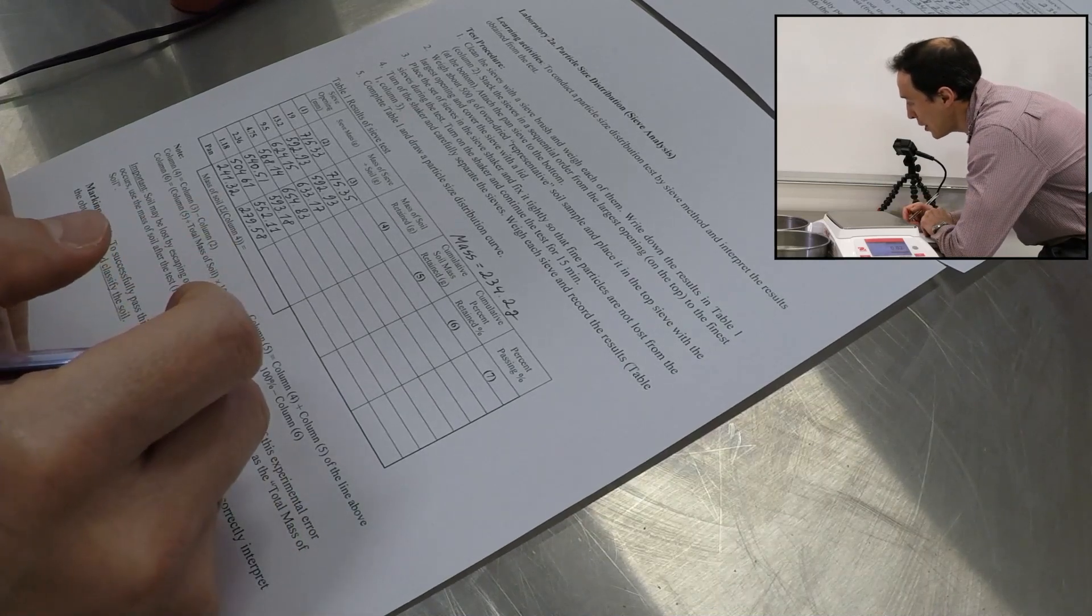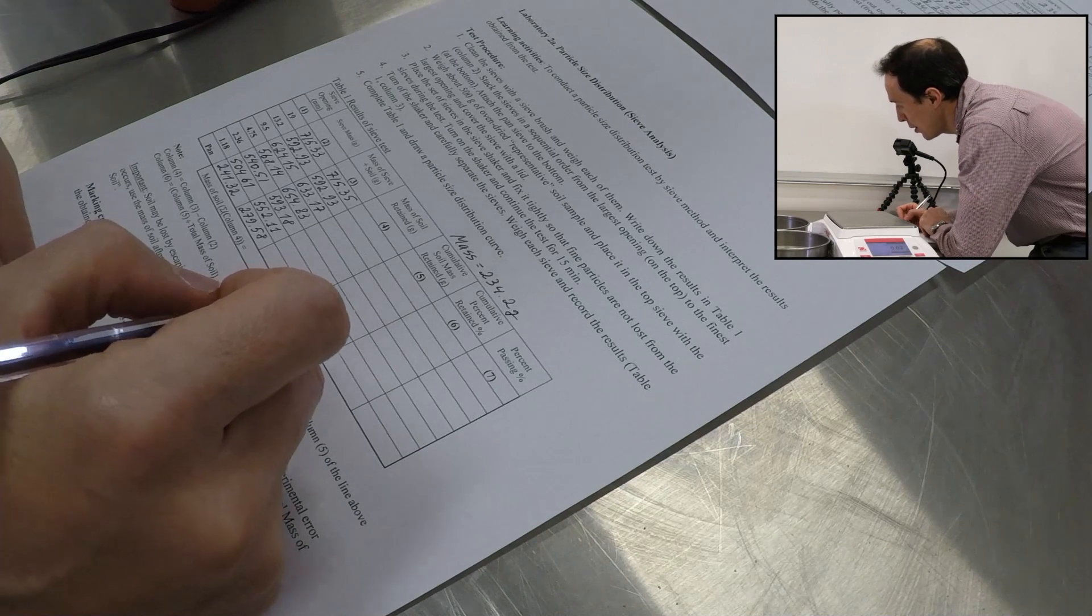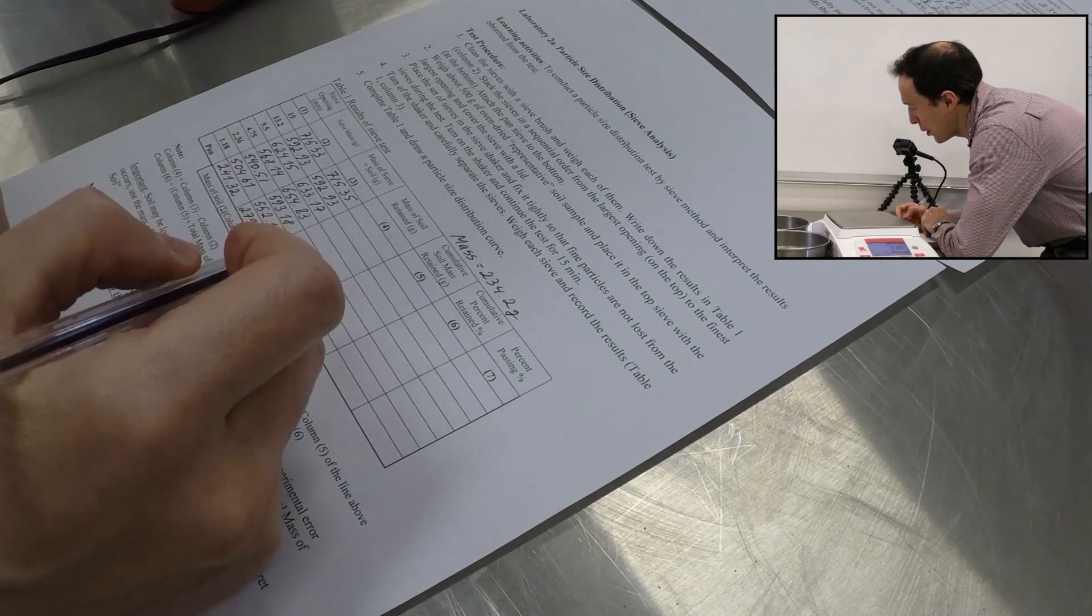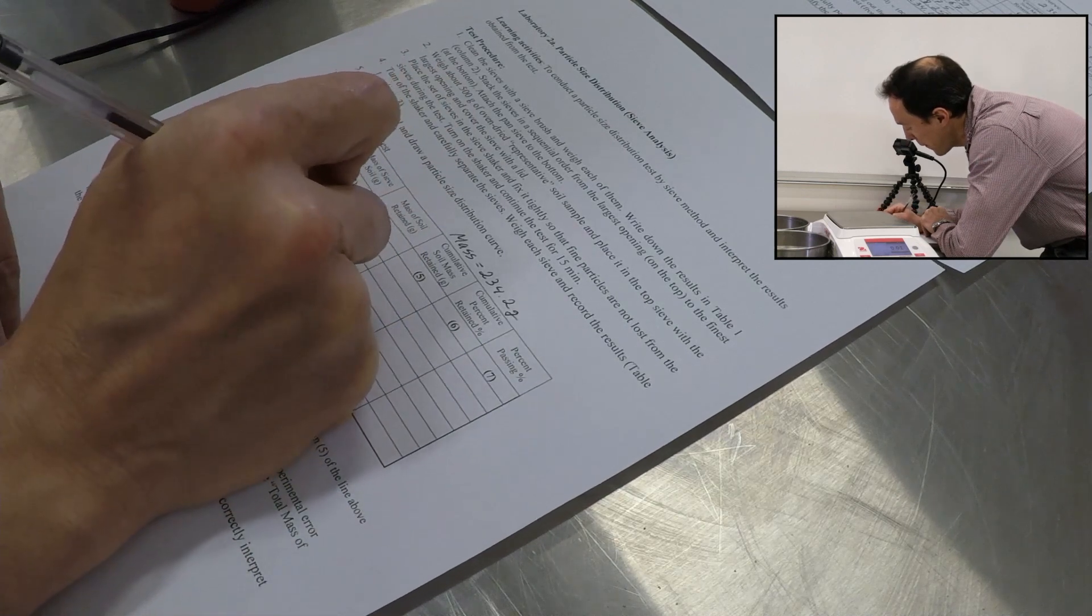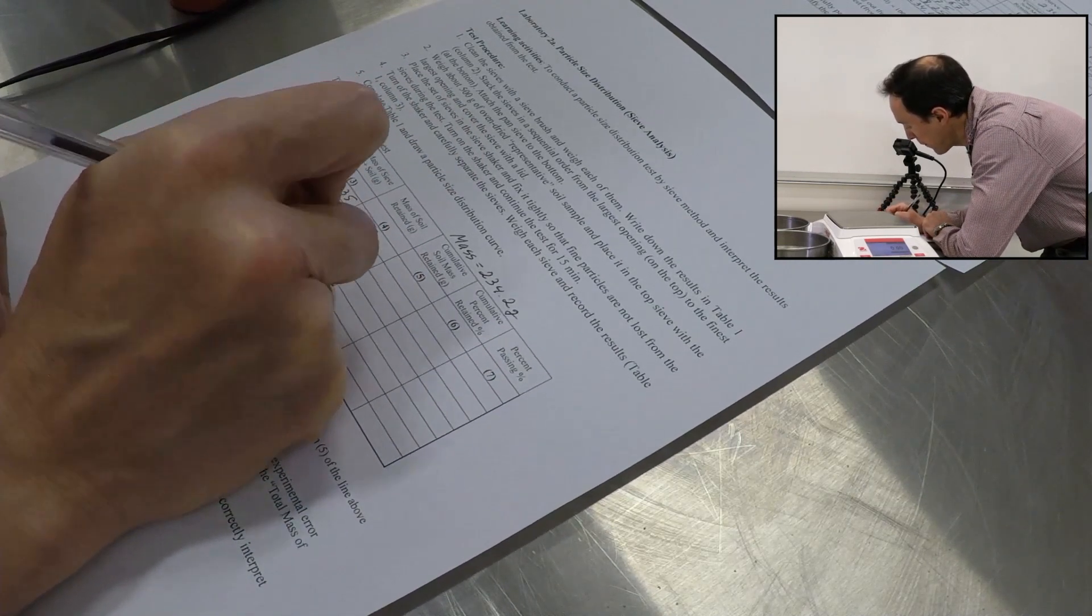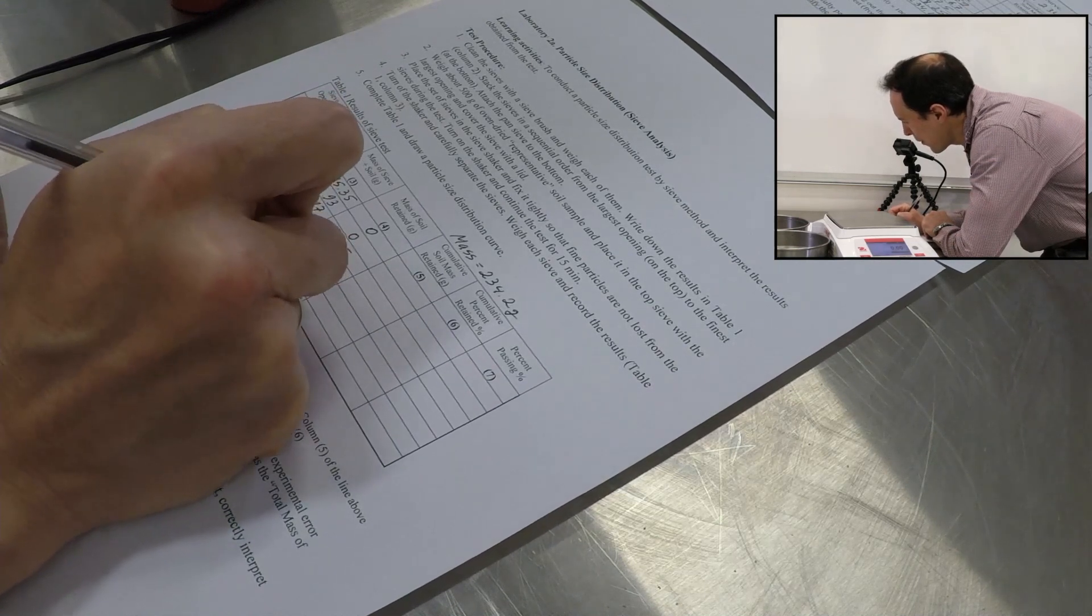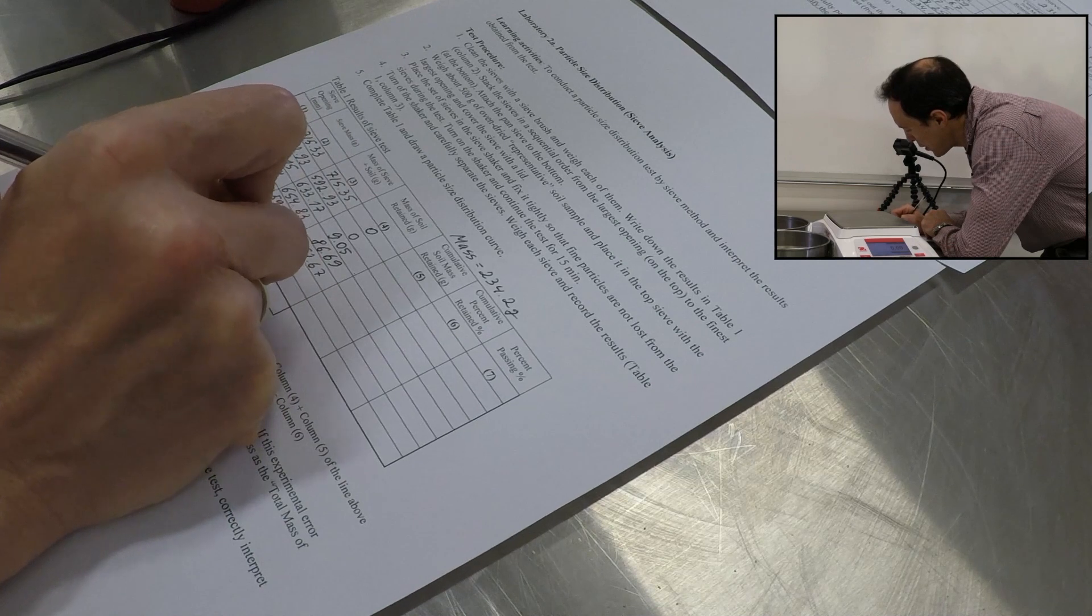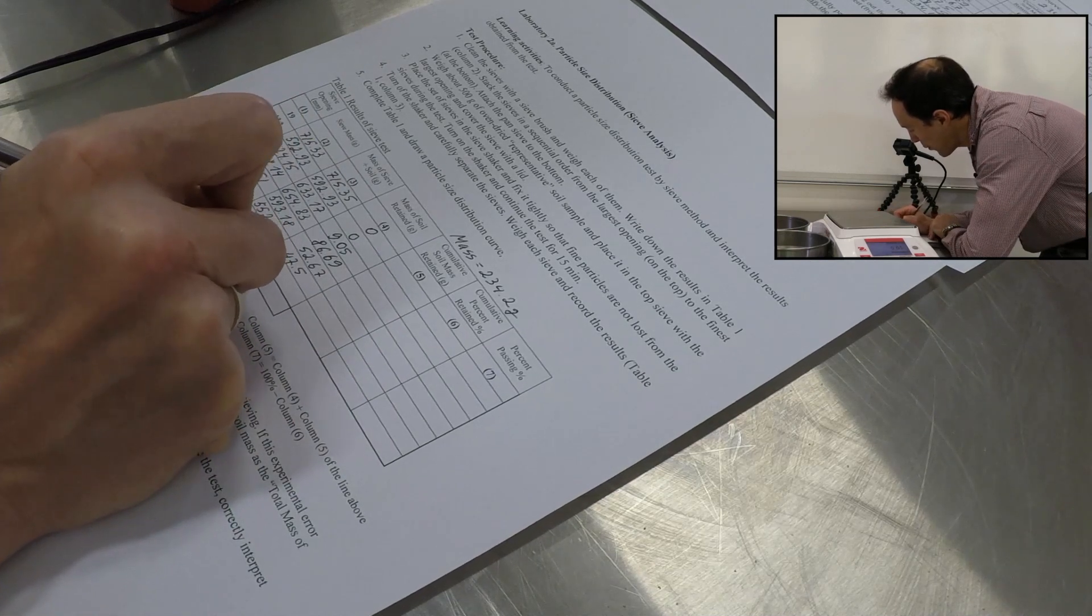Now let's do analysis of the data. And we'll fill in the table. We'll start with column four. Column four is mass of soil retained. What we will do is we'll take a number from column three and we'll subtract the number from column two. That will give us the difference. For the first top sieves, we didn't have any soil in it, so the difference is zero. Then for the sieve 9.5, the difference was 9.05. Then we'll do 86.69. For the next sieve, 52.67, 47.05. And for the pan, the difference was 38.25.